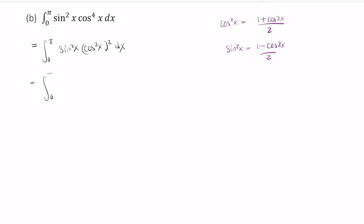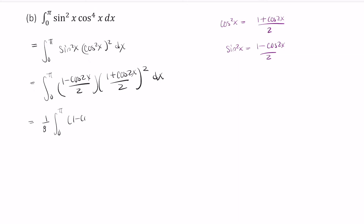So now this becomes the integral from zero to pi of (1 minus cosine 2x over 2) times (1 plus cosine 2x over 2), this whole quantity squared, dx. This simplifies to 1 over 8 times the integral from 0 to pi of 1 minus cosine 2x times 1 plus cosine 2x, quantity squared, dx.